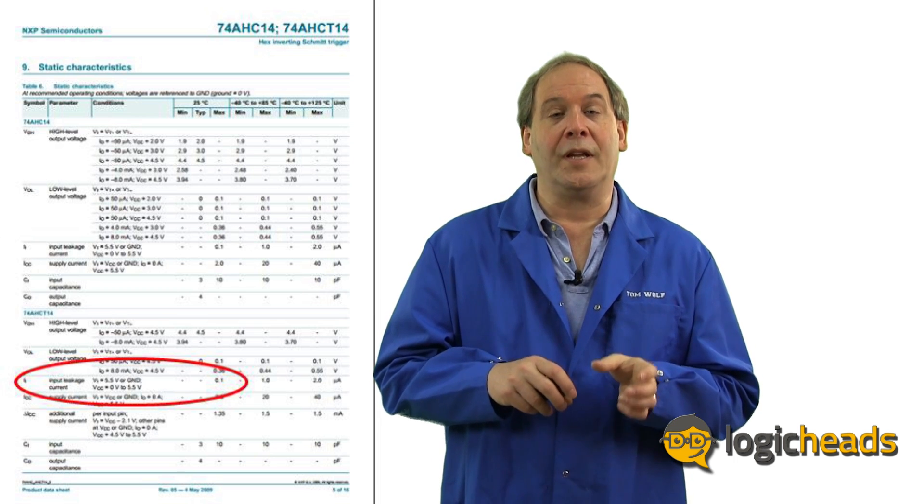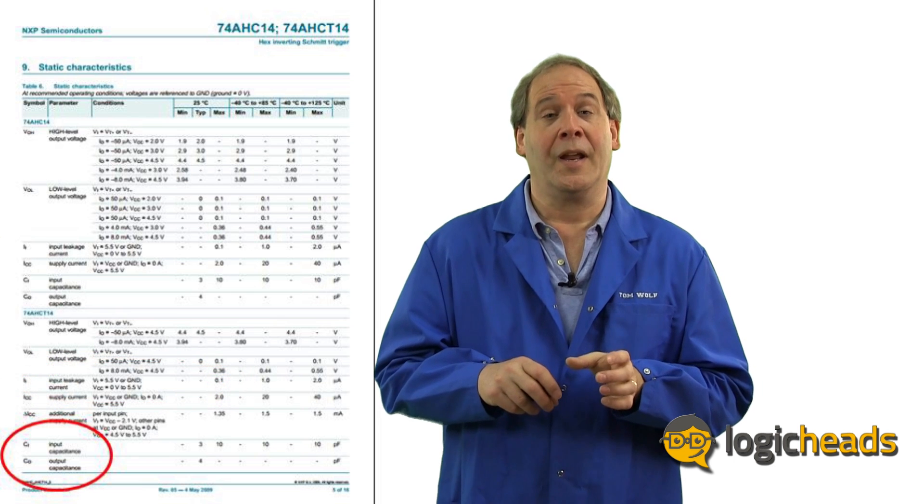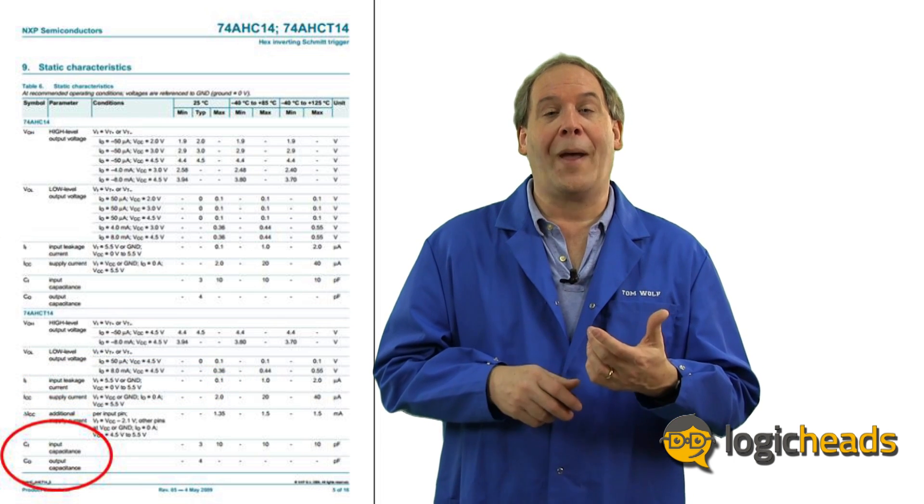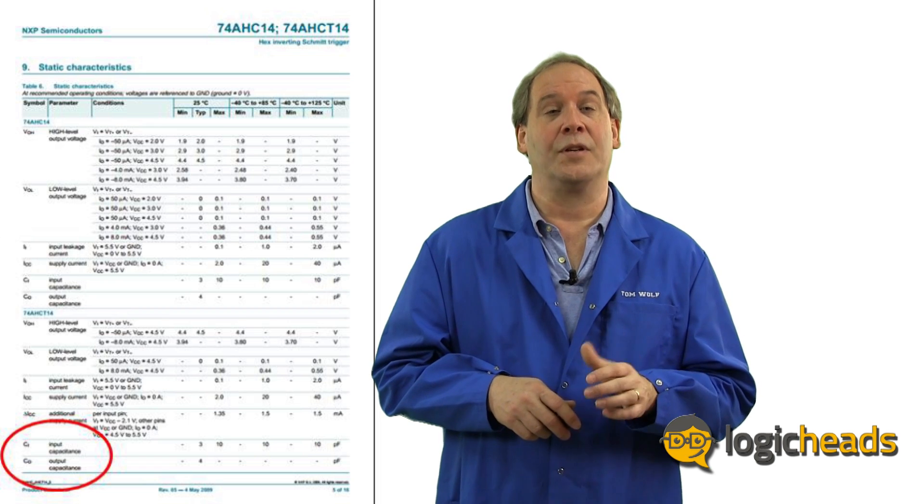It's important to realize that all of these current measurements are based on a certain amount of external capacitance at the input and output pins. These values are seen in CI, capacitance in, and CO, capacitance out. And they give you the maximum capacitance values that the device can drive into.